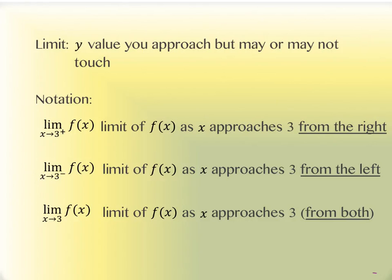A limit — the idea of it is it's a y value that you get really close to. You approach it. You may or may not actually touch it. Your image might be something like what happens with x values on asymptotes — that x value gets really, really close to that vertical line that it can't really touch. The x value limit is actually getting close to 3 or something like that. But when we're talking about limits, we're talking about the y value and what the y value is doing.